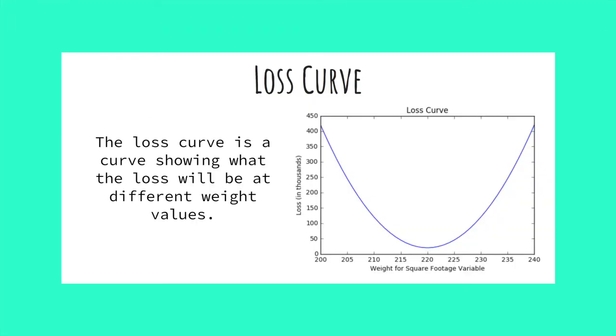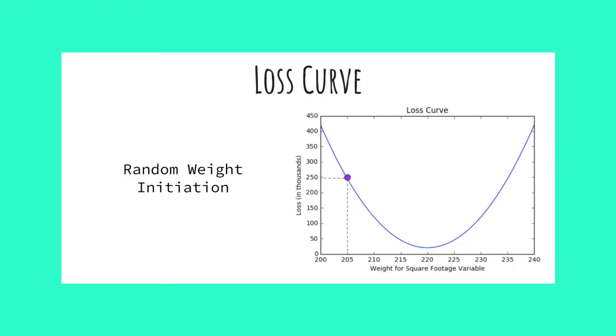This is a loss curve. It shows what the loss is at different weight values. Here, for example, we have a weight of our square footage variable at 205. At 205, we will have a loss of about 250,000.